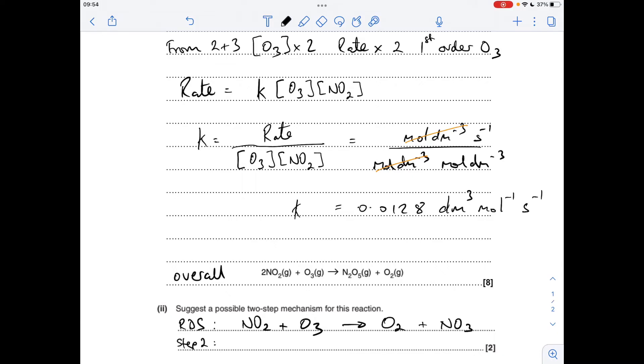Moving on to step two, we've obviously got to get rid of that NO3 because it doesn't feature in the overall equation. So if we make it a reactant of step two, it will cancel when we add the two steps together. We still need an NO2 because we need two in the overall equation. We've only got one so far, so we'll make that a reactant of step two.